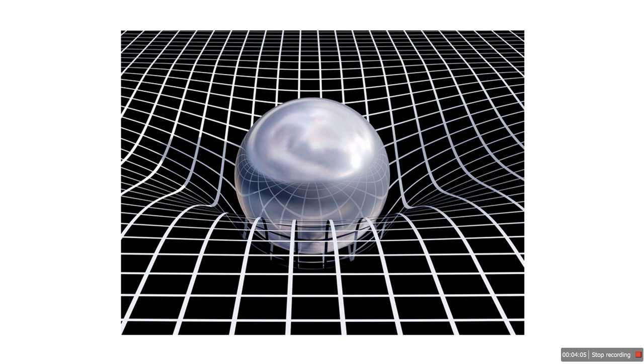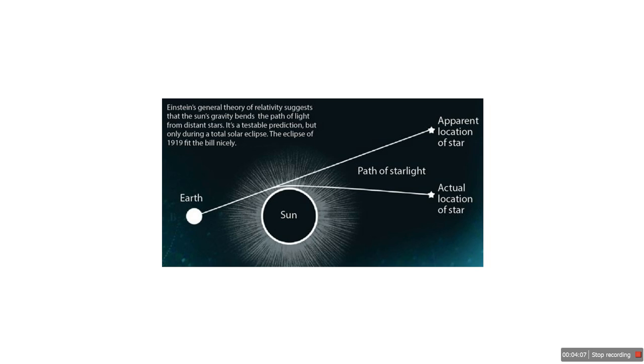Imagine the universe as a giant jello mold. The planets and stars are fruits inside it, making it wobble and curve. Einstein's theory is like discovering that this cosmic dessert has layers of mystery. Each wobble, ripple and curve is part of the beautiful dance of space-time and gravity.